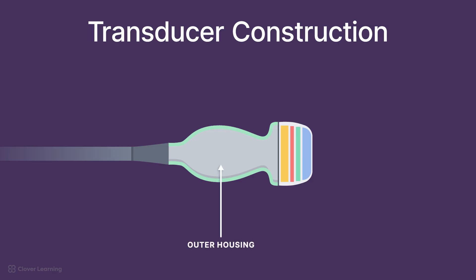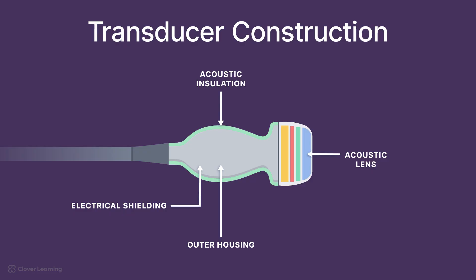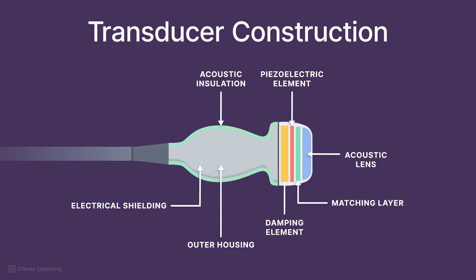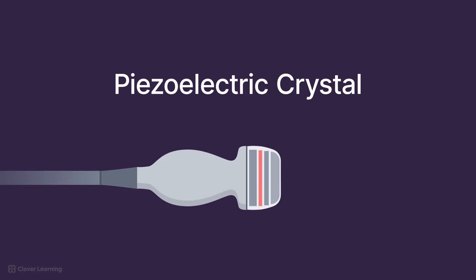The protective housing or case, the electrical shielding, the acoustic insulator, the acoustic lens, the piezoelectric element, the matching layer, and the damping element or backing layer. It's easiest to think of these components as a series of layers that each have a unique function. We'll start with the piezoelectric crystal at the center and work our way out to the transducer's protective housing.